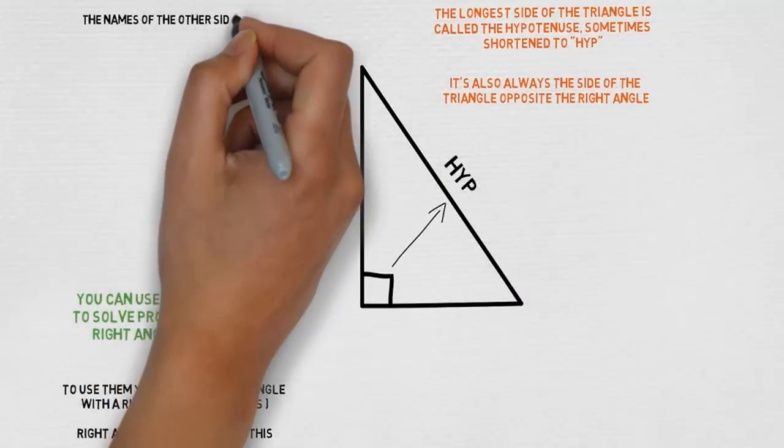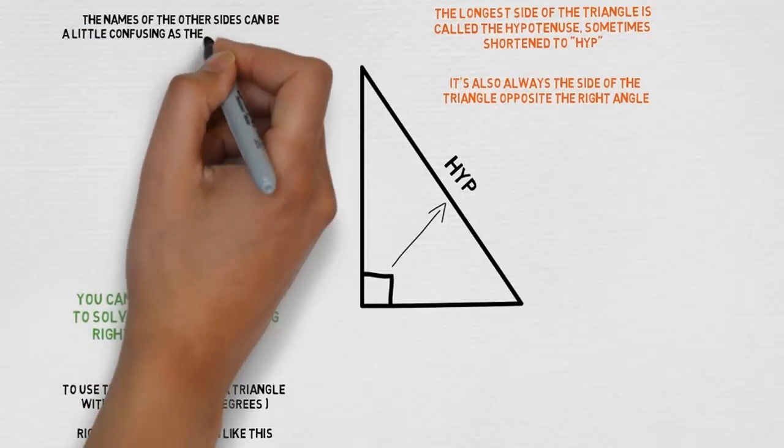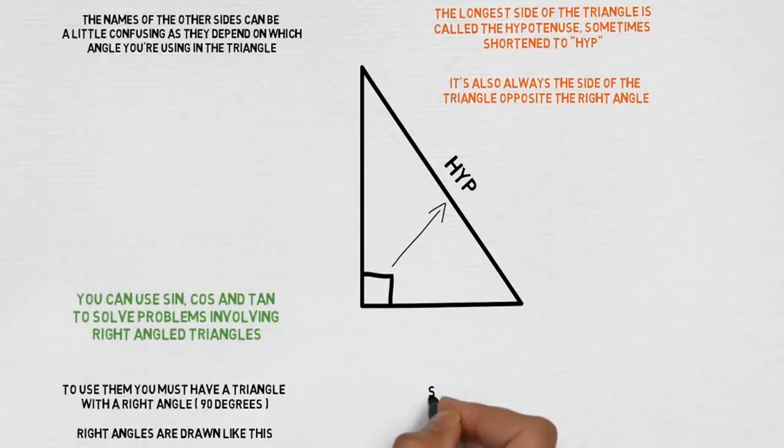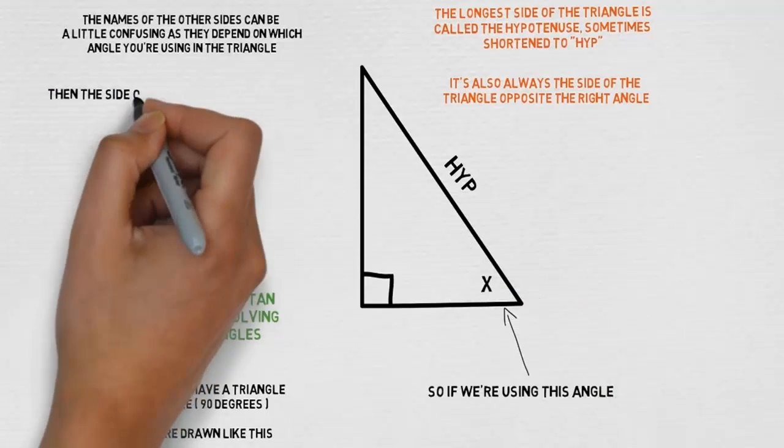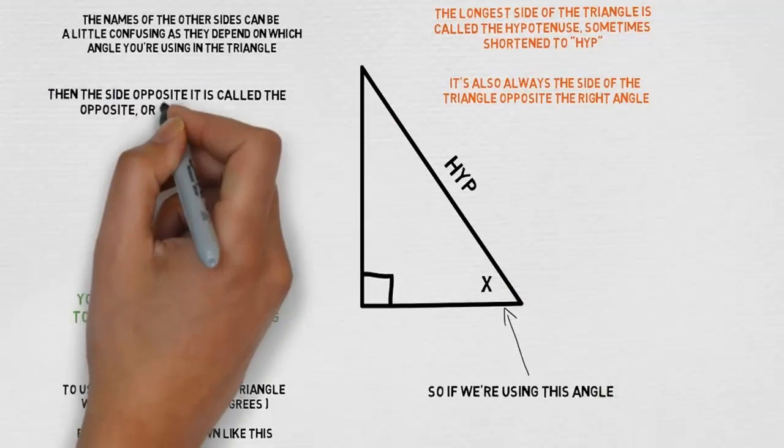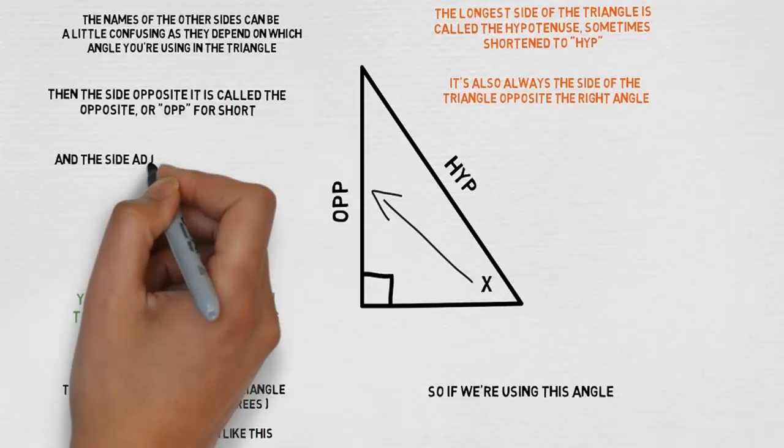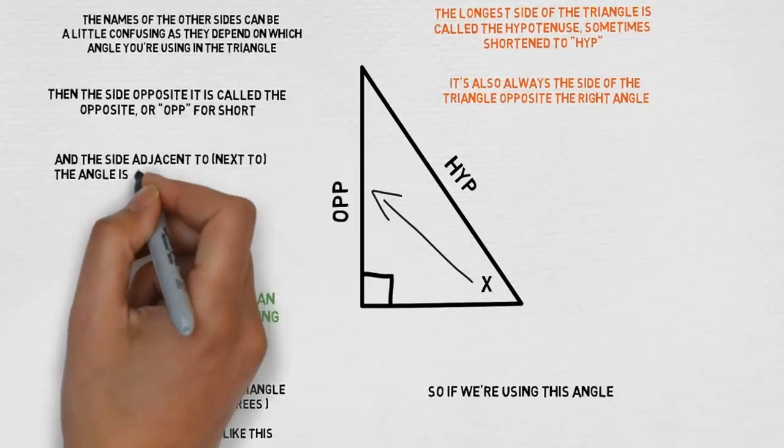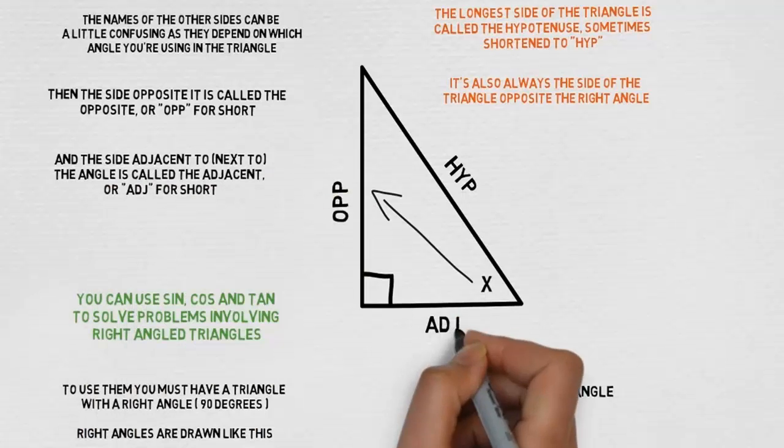The names of the other sides can be a little confusing, as they depend on which angle you're using in the triangle. So if we're using this angle, then the side opposite it is called the opposite, or OPP for short. And the side adjacent, which means next to, the angle is called the adjacent, or ADJ for short.